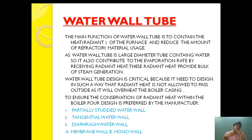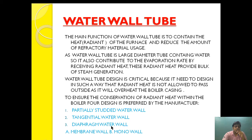Different types of tube designs are used depending on the type and pressure to ensure conservation of radiant heat within the boiler. Four designs are preferred by manufacturers: first is the partial studded water wall, second is the tangential water wall, and third is the diaphragm water wall, which can be categorized into two types — membrane and monowall.